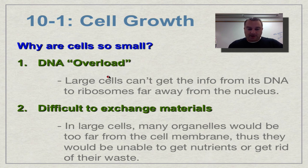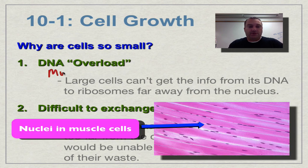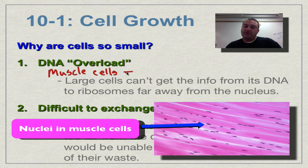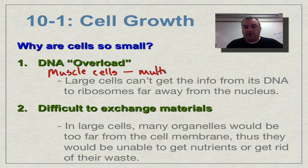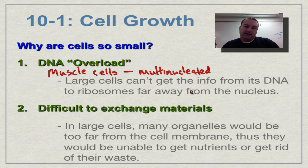Some cells that are really long — for example, skeletal muscle cells — get around this problem. A single muscle cell can run from your hip all the way down to your knee. They actually have more than one nucleus, which is called multi-nucleated, meaning more than one nucleus. This allows them to get RNA transcripts out to all the ribosomes throughout the cell.